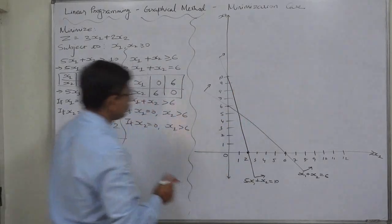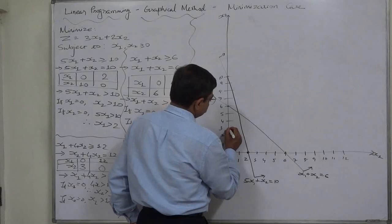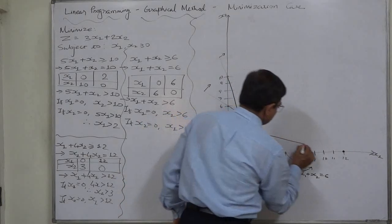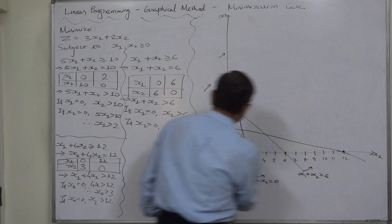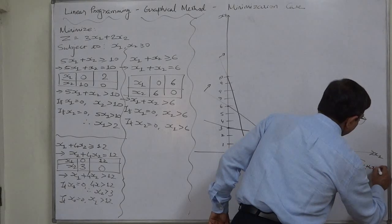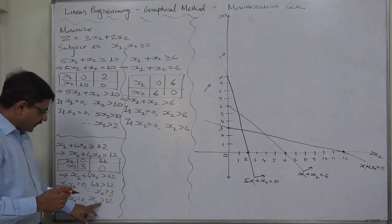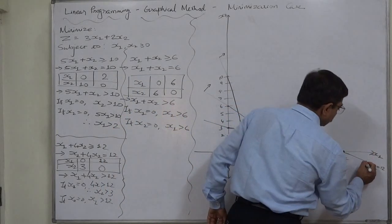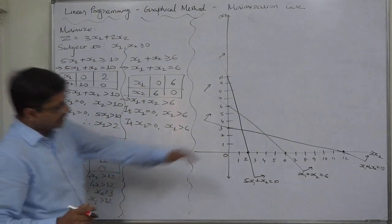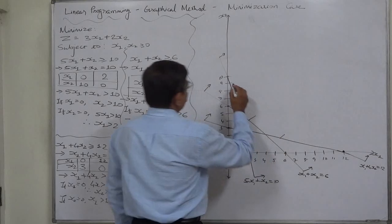The third line passes through x1 equals 12 and x2 equals 3 — this is x1 plus 4x2 equals 12. For the inequality part: x1 greater than 12 means outer side; x2 greater than 3 means upper side. So shading is on the upper side of this line as well.